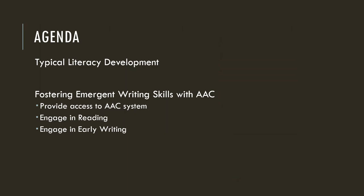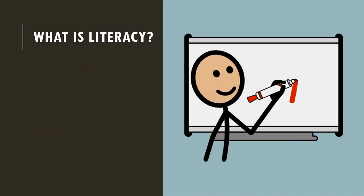I want us to dive into the agenda today. To help you plan for the next one hour, we will start with a review of what typical literacy development looks like. We will use this foundation to help us understand what we can do to help foster literacy for those who are using AAC. We will look at three specific things we can do to support literacy: providing access to the AAC system, engaging in reading, and engaging in early writing. So while this webinar focuses on writing, in the emergent view of literacy, literacy is learned through interaction with and exposure to all aspects of literacy — listening, speaking or AAC, reading, and writing.